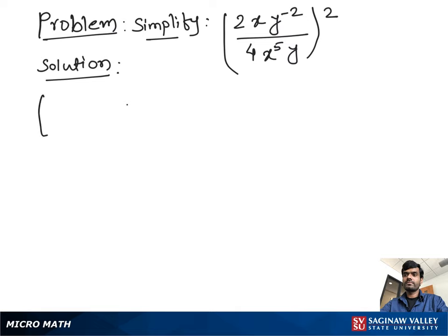Simplify (2xy^-2)/(4x^5y) all to the second power.